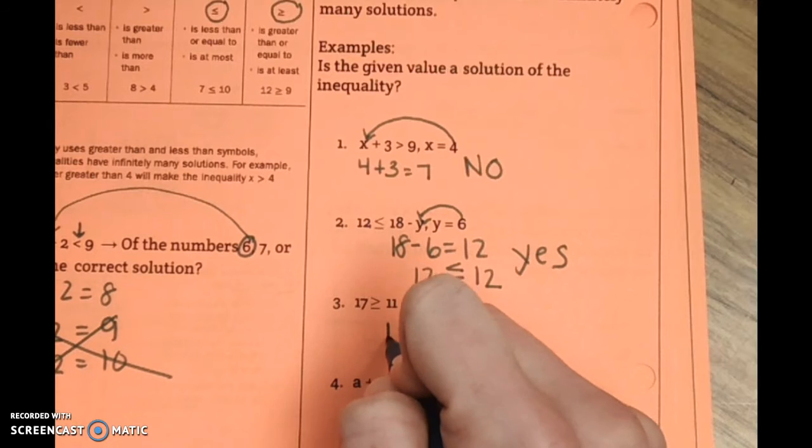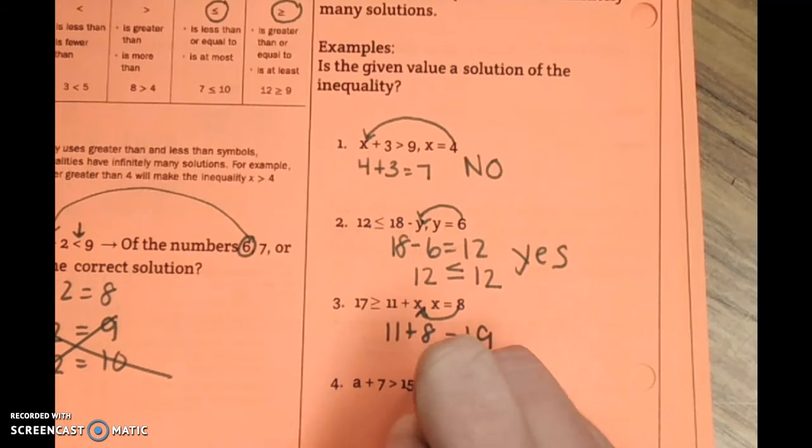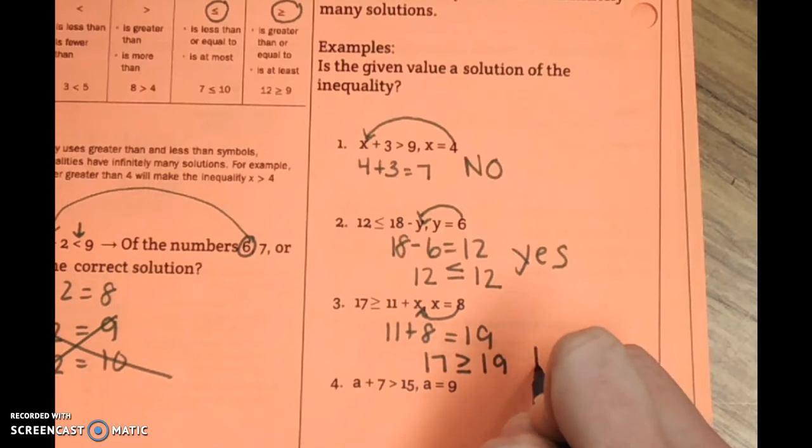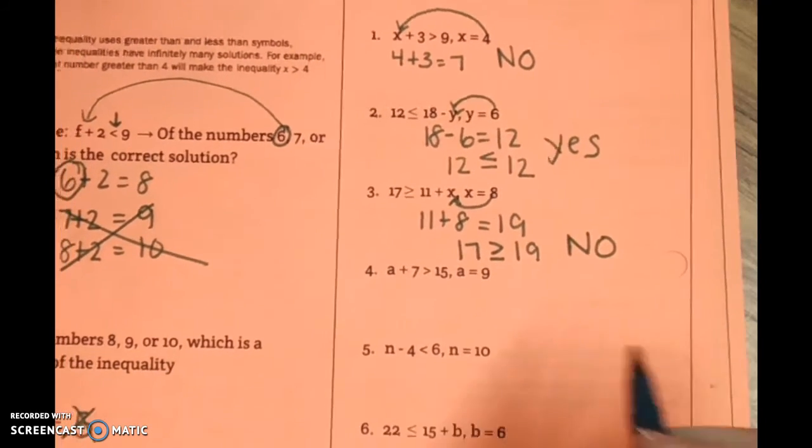Now, we're going to plug 8 in. We have 11 plus 8, and that equals 19. So, is 17 greater than or equal to 19? No, it is not. So, 17 is less than 19.